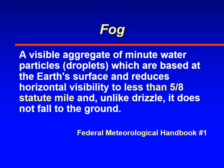Fog is a visible aggregate of minute water particles or droplets which are based at the Earth's surface and reduce horizontal visibility to less than five-eighths of a statute mile. They don't fall to the ground. The key thing to remember is less than five-eighths. If it's five-eighths of a mile or more visibility, then it will be mist. Less than that, it's fog.